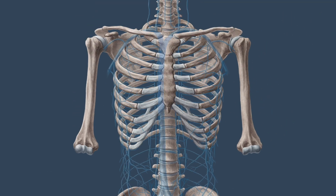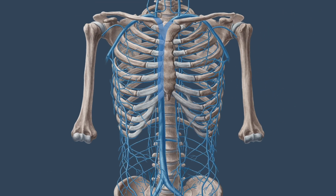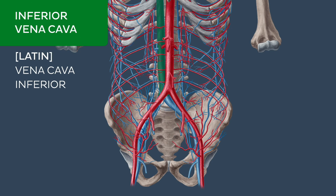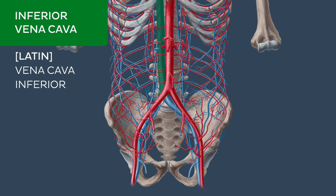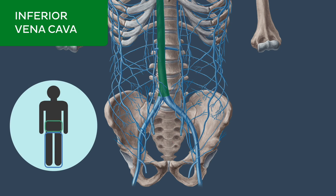Moving on to the major veins of the abdominal wall, we meet the inferior vena cava. The inferior vena cava is the largest vein of the human body. It is located at the posterior abdominal wall to the right of the aorta. The inferior vena cava returns venous blood from the lower limbs and abdominopelvic region to the heart.